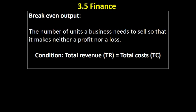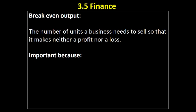The break-even output is the number of units the business needs to sell so that its total revenue — the money it gets from selling those goods — equals the total costs of producing those goods. In other words, the business isn't making a profit or a loss. Below this level of output the business is likely making a loss; above it, if it can sell all those units, it will be making a profit.